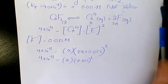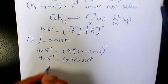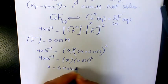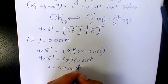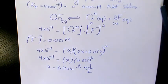So 4 times 10 to the power of negative 11 divided by 0.025 to the power of 2, so x will be 6.4 times 10 to the power of negative 8 moles per liter. So that's the solubility of calcium fluoride in a 0.025 molar sodium fluoride solution.